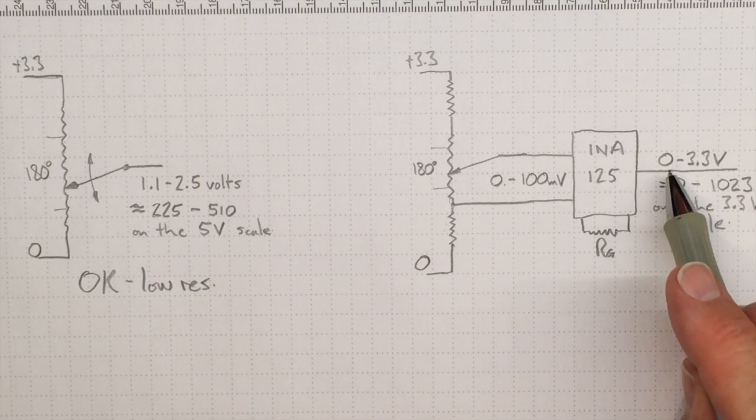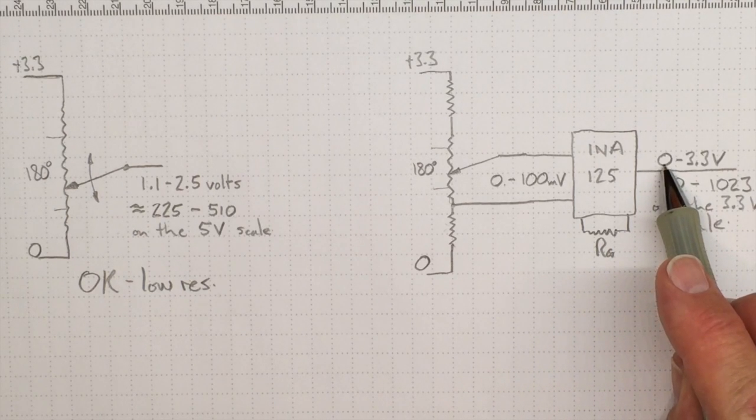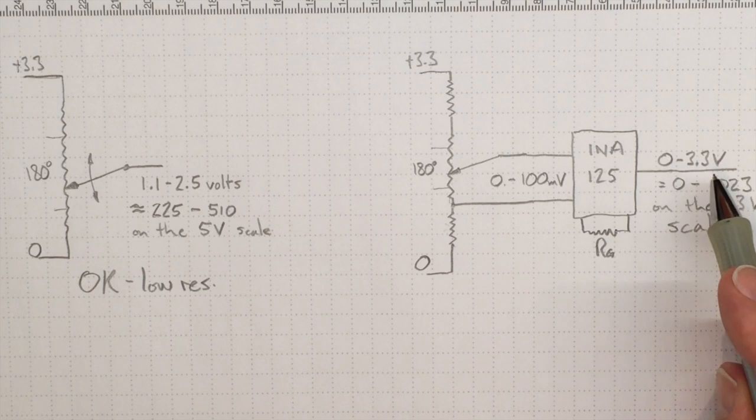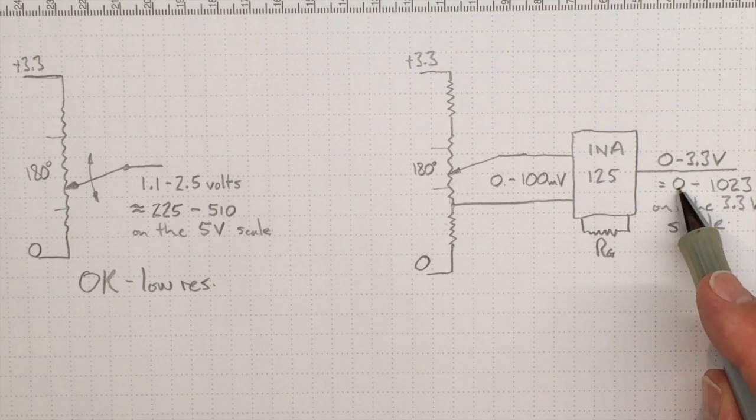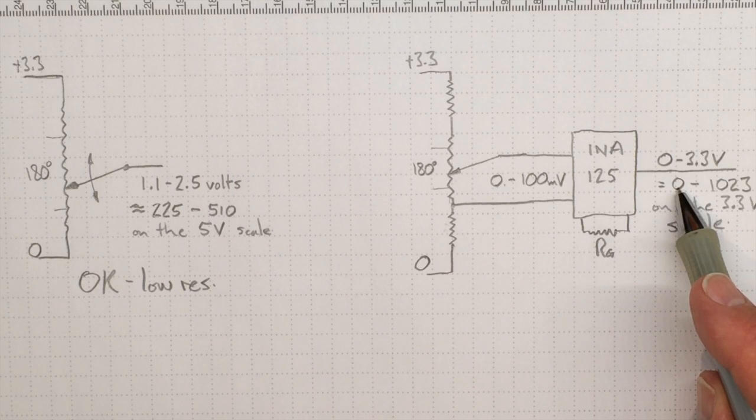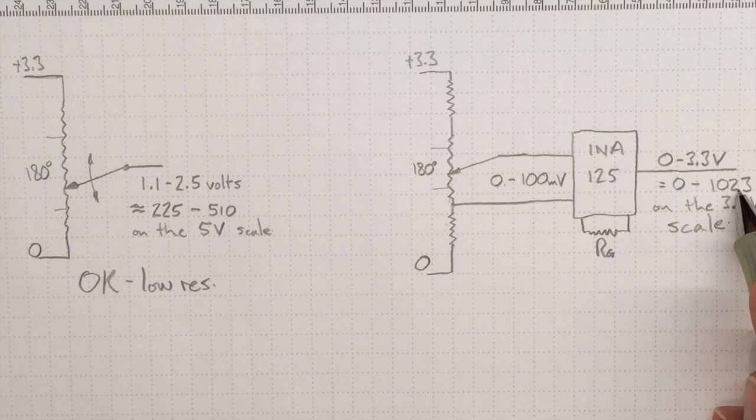And if I got everything right, I might be able to get an output that went from 0 up to 3.3 volts. And if I used the 3.3 volts scale, that would give me values on analog read from 0 up to 1,023.